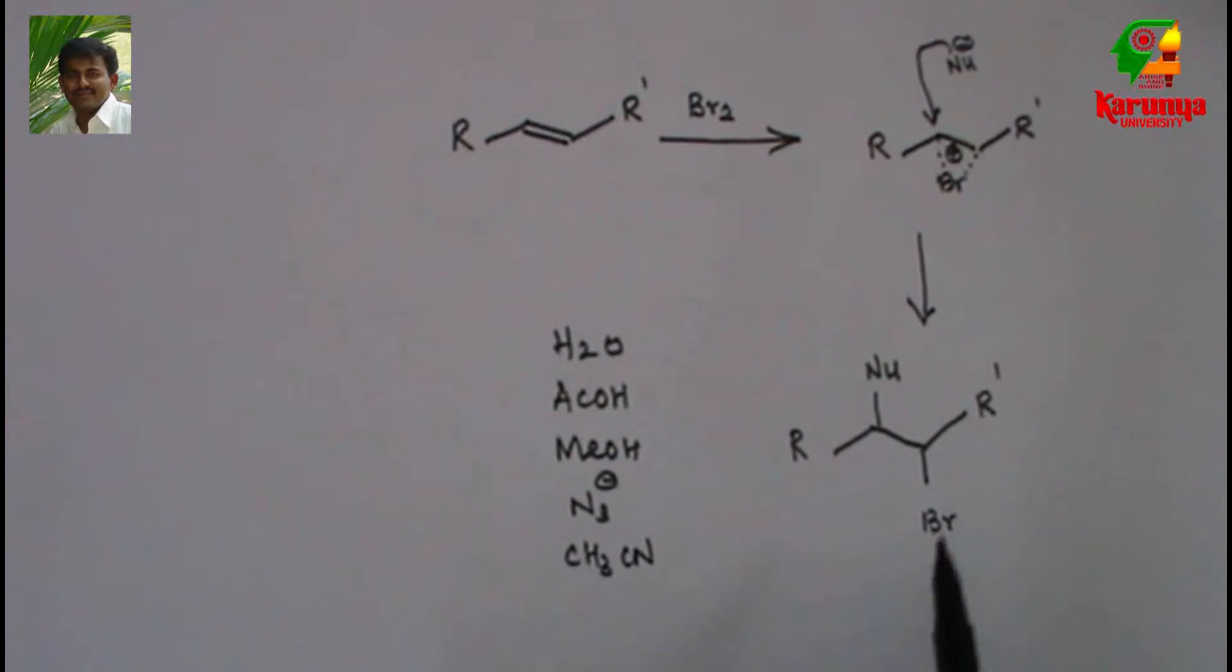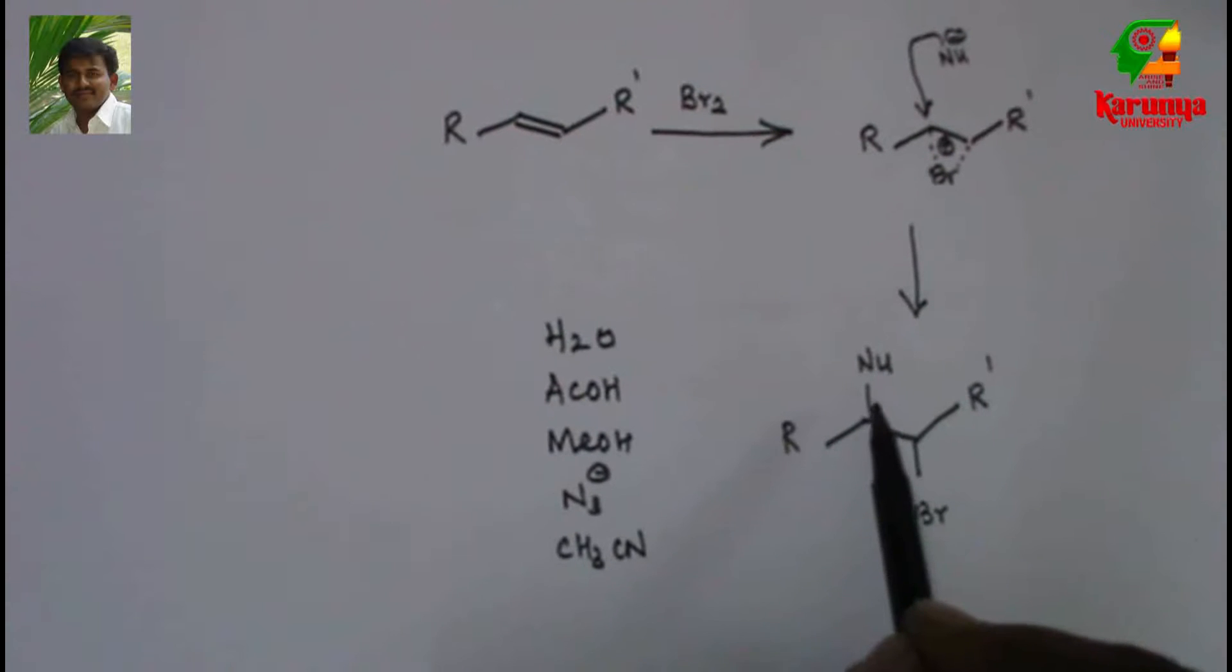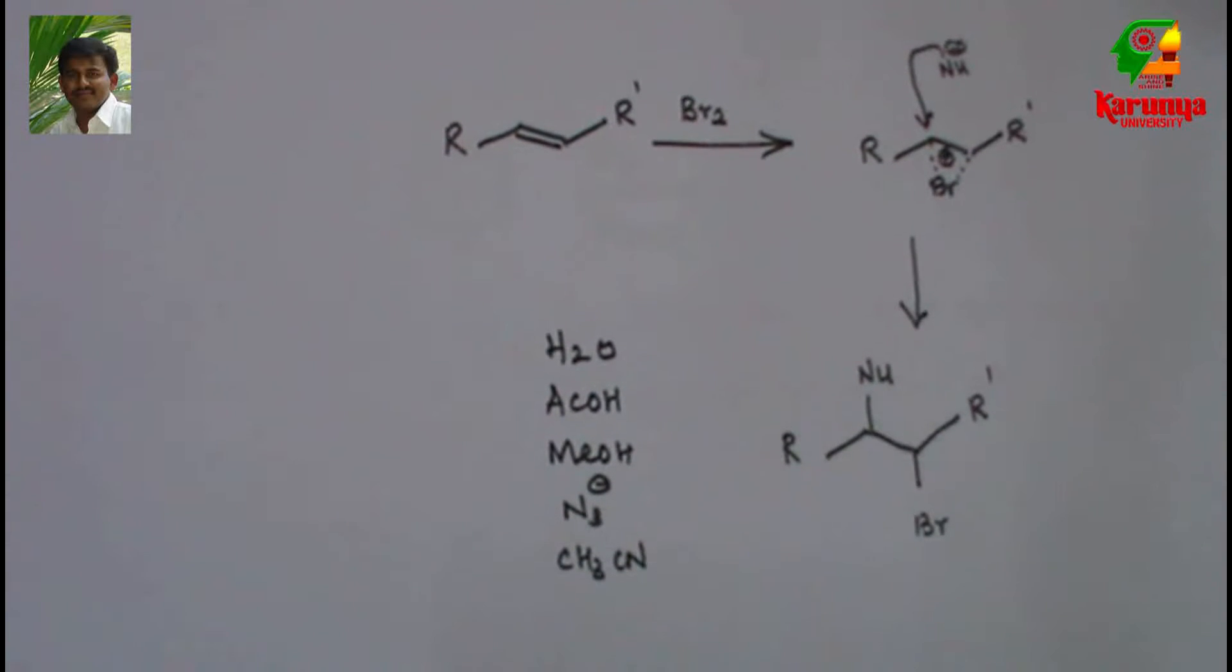Based on that we call it bromohydroxylation, bromoacetoxylation, bromomethoxylation, bromoazidation, and so on. If we don't add any other nucleophile, the bromide itself will open this to give dibromide.